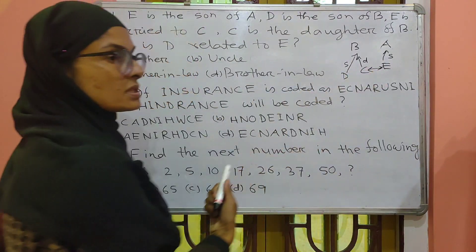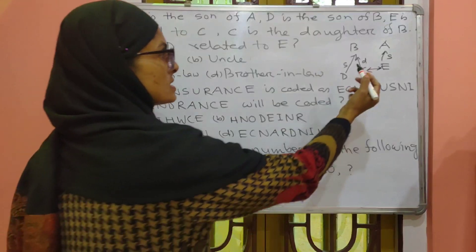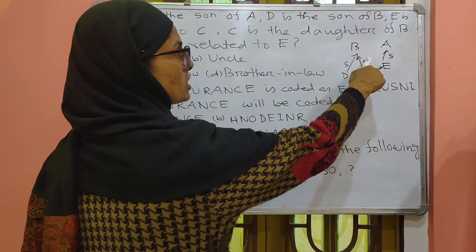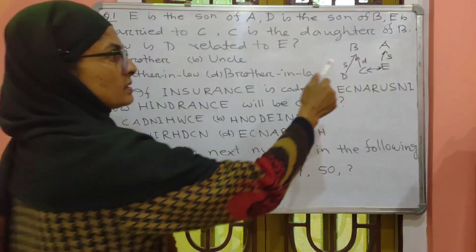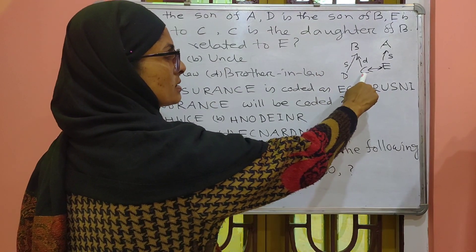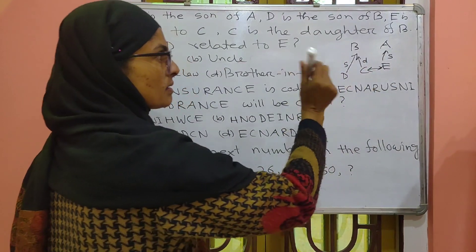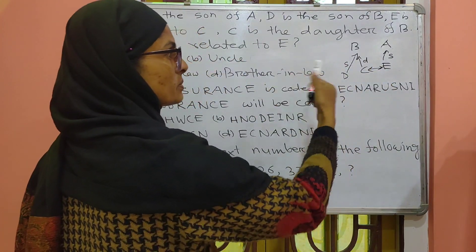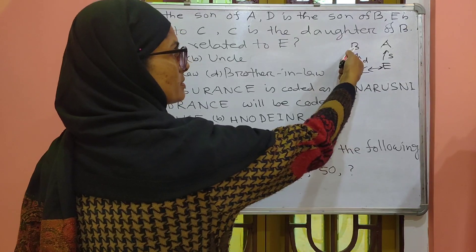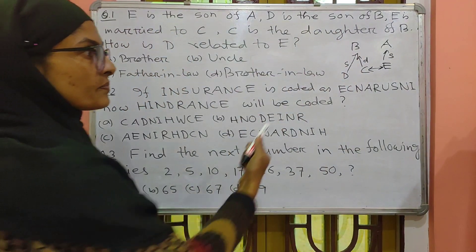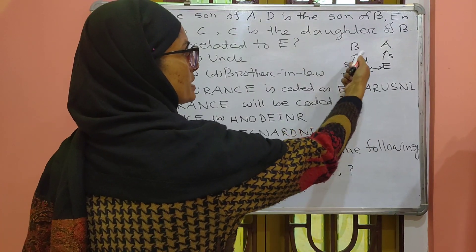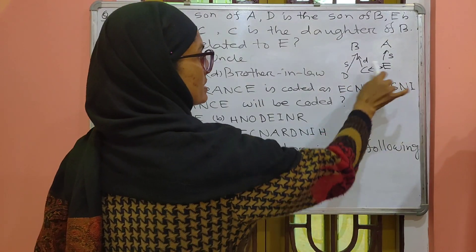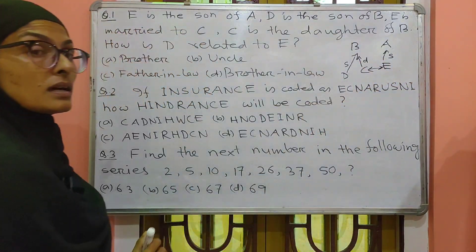C and E are married to each other. C is the daughter of B, and D is the son of B. So D and C are siblings — that means D is the brother-in-law of E. The answer is brother-in-law.